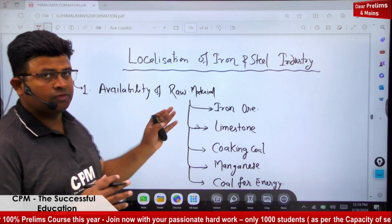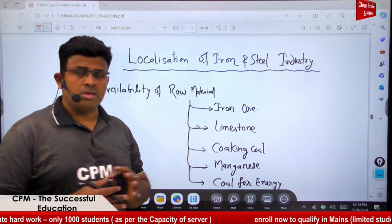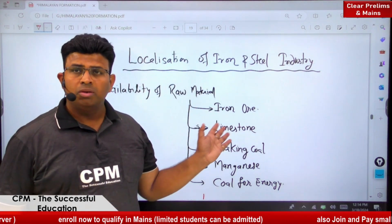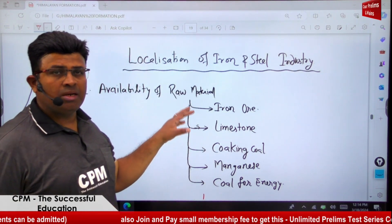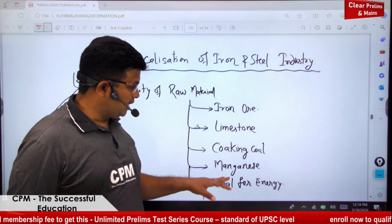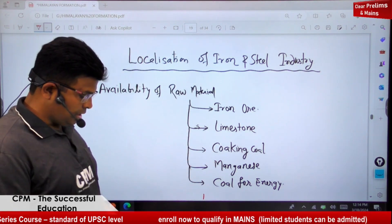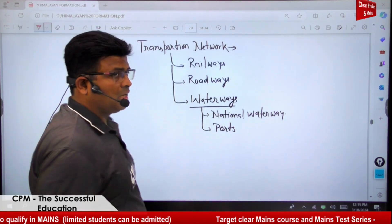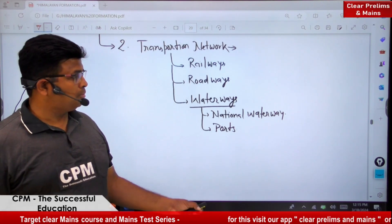The first factor we'll see is the availability of raw materials. The raw materials required are iron ore, limestone, coking coal, manganese, and coal for energy. The second factor is the transportation network, which includes railways, roadways, waterways — including national waterways and ports.